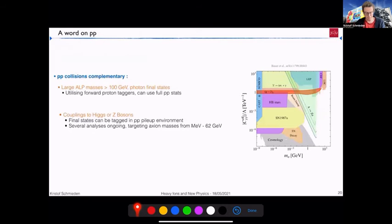One word on proton-proton. So these are complementary analyses, in particular for large ALP masses larger than 100 GeV. They use photon final states, and then they can start using the forward proton taggers, and can use the full proton-proton data set. So this is something then where the heavy ions cannot compete with, even using photons in the initial state. And using the couplings of the Higgs or Z boson, well, this probes different couplings. So this is really complementary to what is done with the photon initial and final states. And these can be attacked even in the pileup environments, from masses from the MeV to several tens of GeV region.